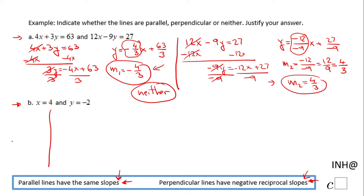You should remember that x equals 4 means a vertical line that passes through the x-axis at x equals 4. This is x equals 4.